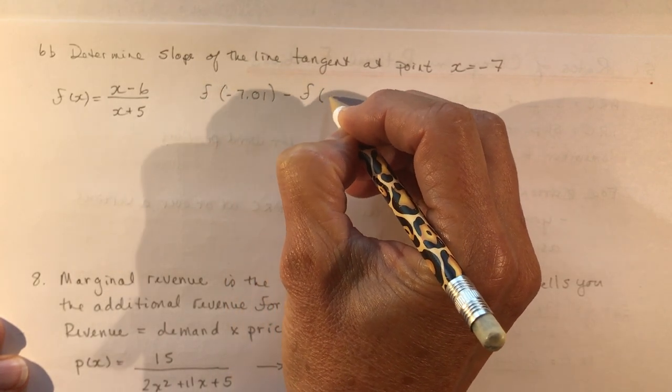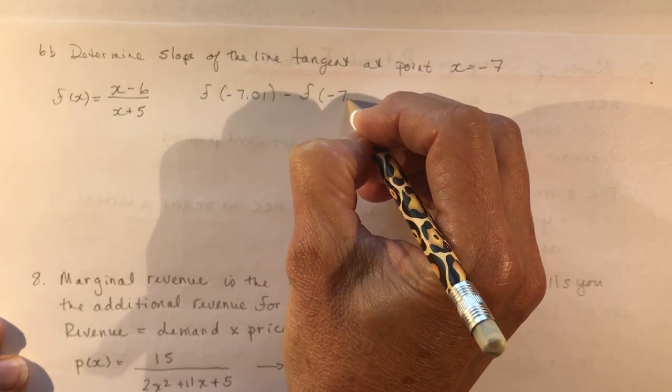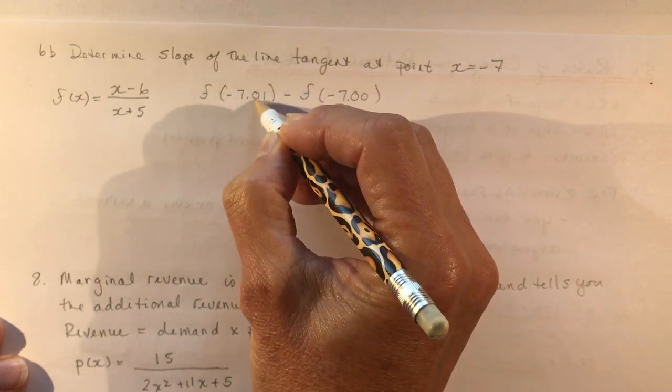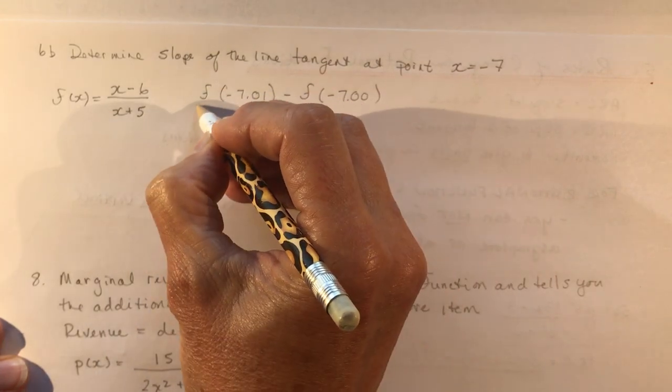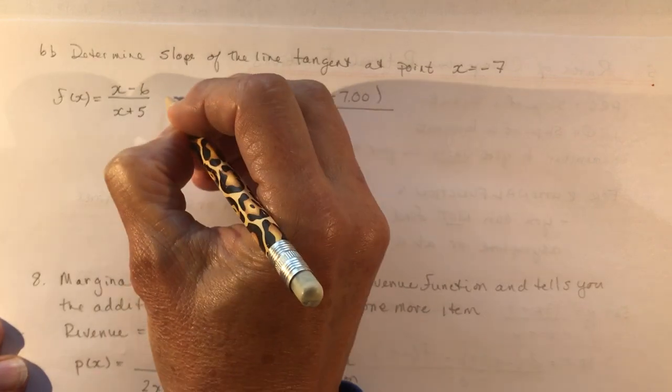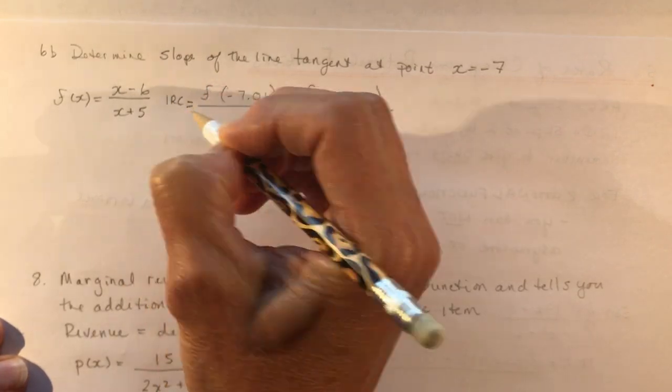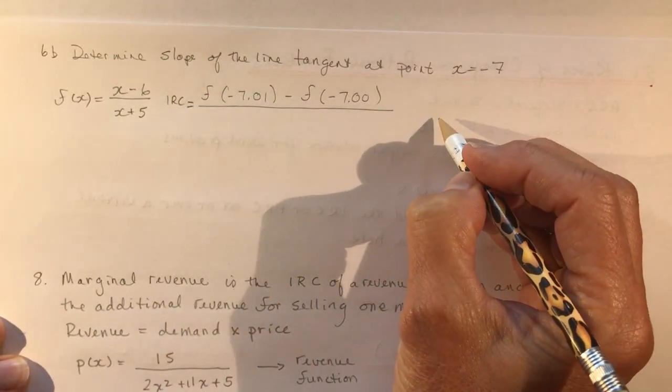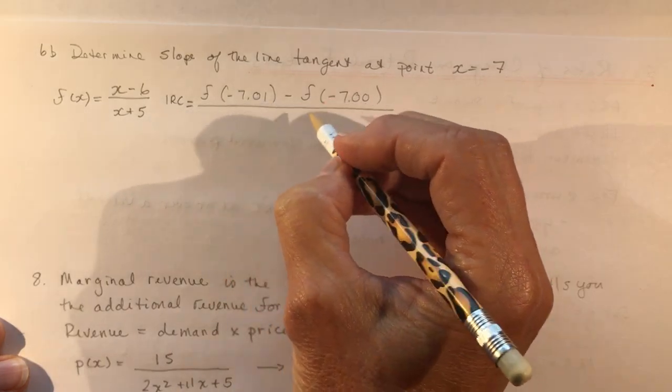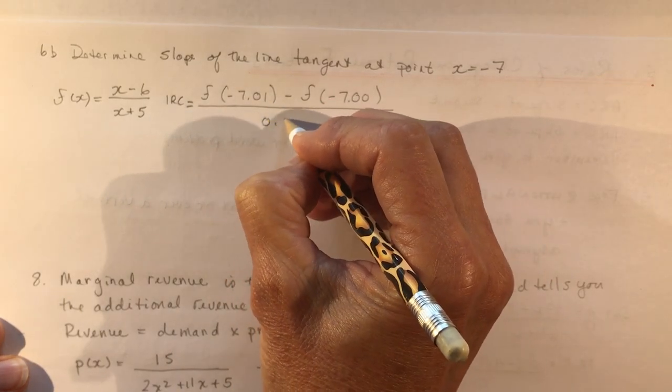So it doesn't really matter, right? You're still only 1/100th of a point across. So again, this is IRC, or this is going to be the slope, estimation of the slope, over 0.01.